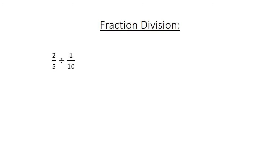Fraction division: 2 over 5 divided by 1 over 10. Flip and multiply: 2 over 5 times 10 over 1 equals 20 over 5, which equals 4.